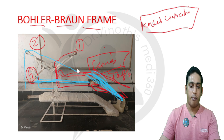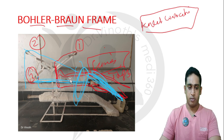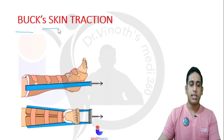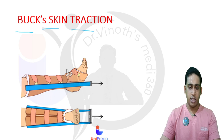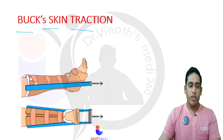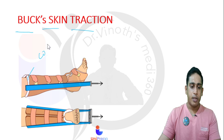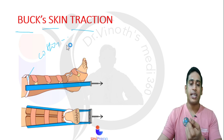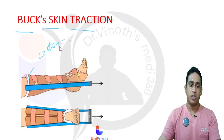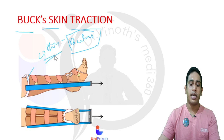Sometimes when the patient is not cooperative, we can circumferentially apply a bandage with the BB frame. Next, box skin traction — our routine skin traction. In routine skin traction, both in the sagittal and anteroposterior plane, we first apply a cotton pad. This cotton pad prevents pressure-related or compression-related sores, because continuous traction exerts friction-related injury to the skin.